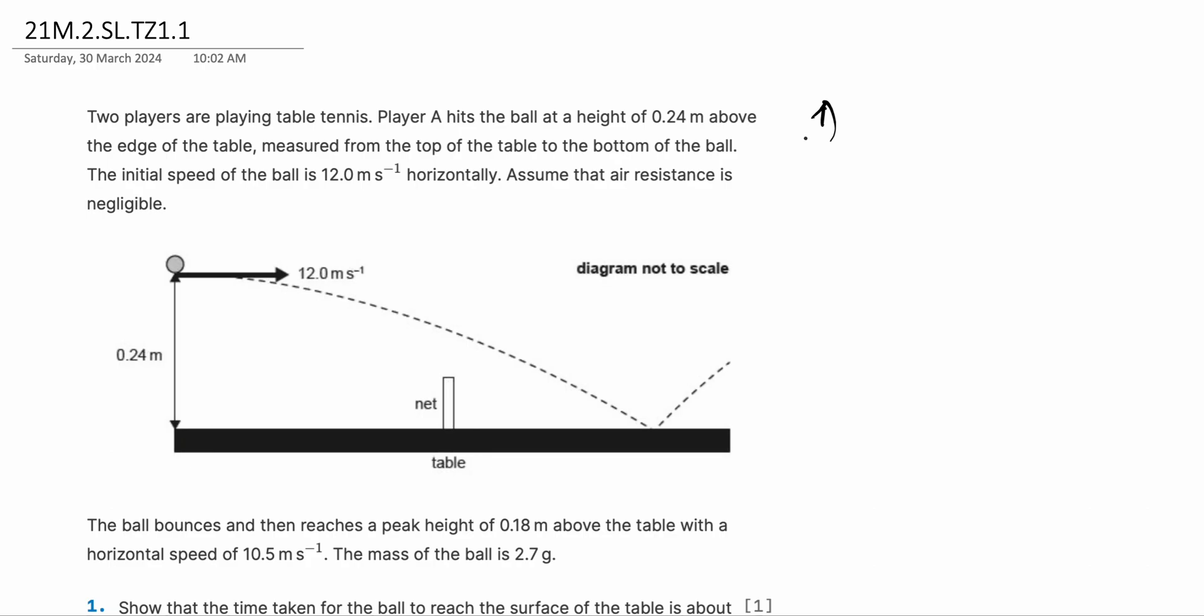Okay, this is a projectile motions question, so we have to refer to our Suvat equations. And the equation that's most helpful here would be S equals UT plus half AT squared. We know that S, the displacement, is 0.24 meters.